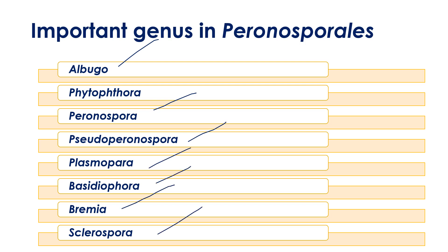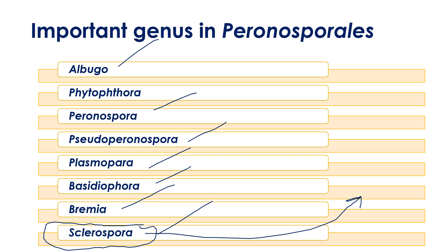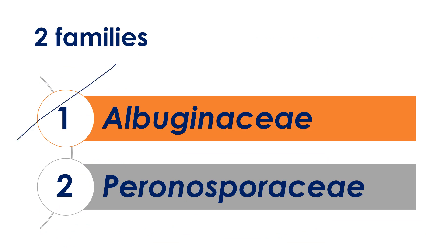...Basidiophora, Bremia, and Sclerospora. Don't confuse Sclerospora — according to Cricketal classification it actually comes under Sclerosporales. We are going to follow Cricketal classification but with some present-day variations. Sclerospora will be explained again in Sclerosporales. The two families are: Albuginaceae and Peronosporaceae. Let's start with Albuginaceae.